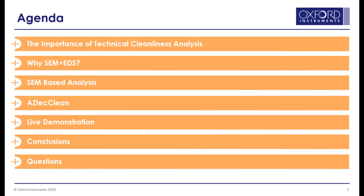In this tutorial, I will try to explain why particle characterization is important in relation to technical cleanliness analysis. This will be followed by an introduction to analysis using Scanning Electron Microscope, how AztecClean can be used to characterize the particles and identify the source of contamination. Then we will go on to a few minutes long live demonstration before the conclusions. At the end of the presentation, we will have time for some of your questions, so please just post your questions during the presentation.